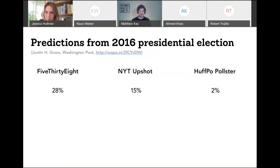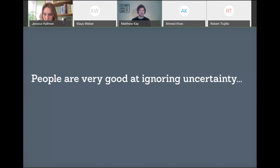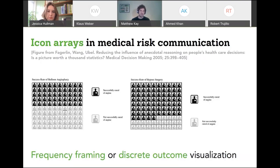I think the problem is not the prediction being made so much as the way it's being communicated. I'm going to show an alternative way of presenting the same information — something called a risk communication theater. The story is that I've given you a ticket to a random seat in this theater. I've colored the seats black in proportion to Trump's chance of winning. If you end up in a black seat, Trump wins; if in a white seat, Clinton wins. Hopefully you'll agree that for the 538 prediction, you actually wouldn't be too surprised to end up in a black seat — probably less surprised than when I just told you there was a 28% chance without the visual. People are very good at ignoring uncertainty, especially when we provide bad uncertainty representations.